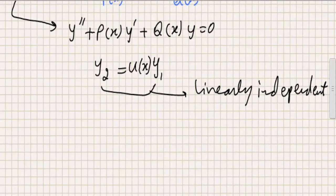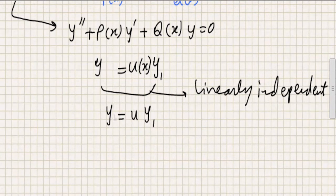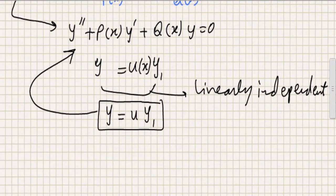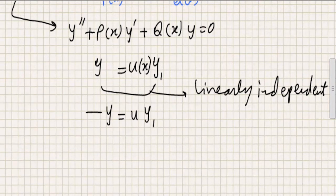So now we have two solutions: y1 is given to us, and y2 equals u(x) multiplied by y1. I'll just use y instead of y2, since right now we're only interested in that solution. So y equals u times y1. Now I want to find the value of y, but in order to substitute into the differential equation, I will need y prime and y double prime, which I have to construct from y.